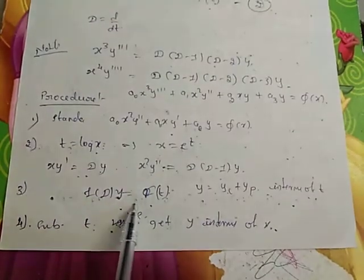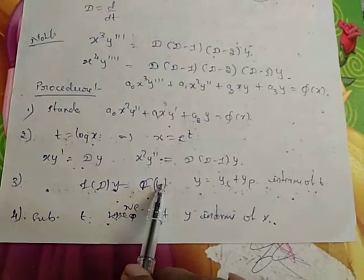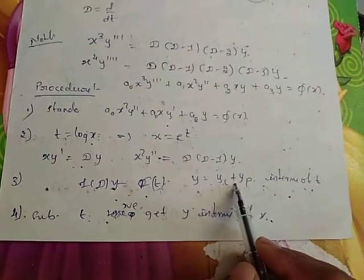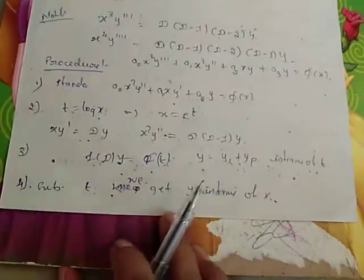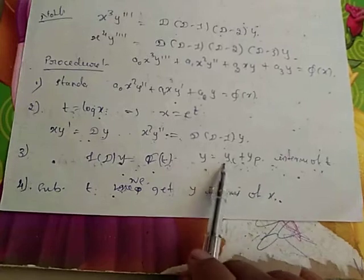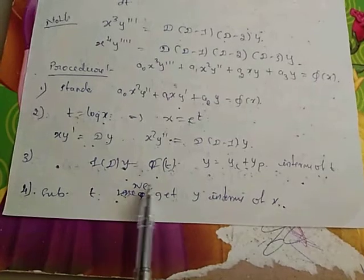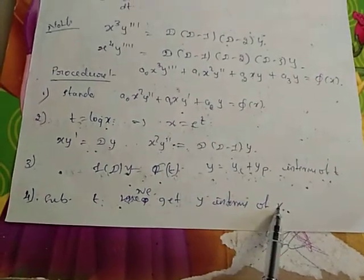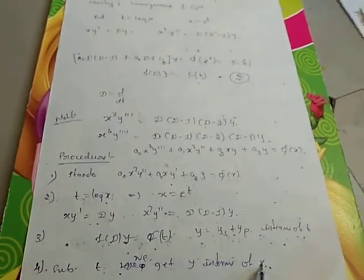After substituting, we get a differential equation with constant coefficients. We then find the complete solution using the complementary function and particular integral, both in terms of T. Re-substituting the value of T gives Y in terms of X. That is the procedure for Cauchy's linear equation.